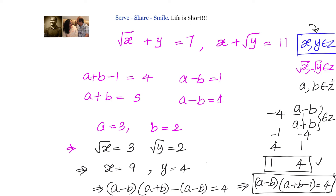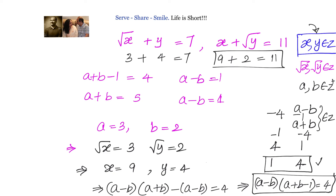Let's substitute and check: √9 = 3, and 3 + 4 = 7 ✓. Then x = 9 and √y = 2, so 9 + 2 = 11 ✓. Both equations are satisfied by x = 9 and y = 4. That's one interesting problem I thought of sharing with you — please do let me know your feedback.